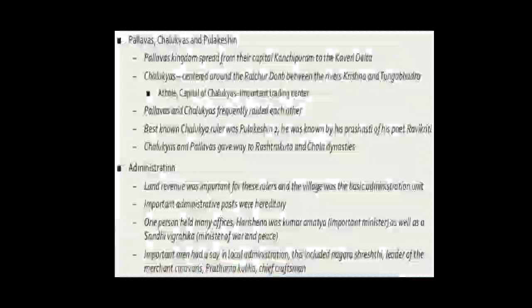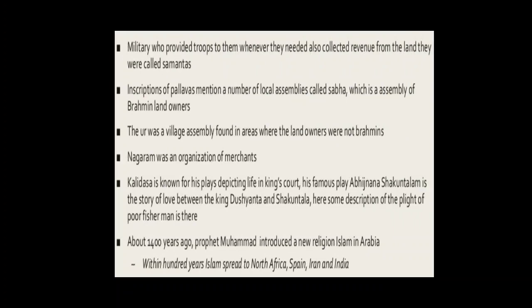These policies were reasonably effective, but sooner or later, some of these powerful men grew strong enough to set up an independent kingdom. A new kind of army: like early rulers, some of these kings maintained a well-organized army with elephant chariots, cavalry, and foot soldiers. Besides, there were military leaders who provided the king with troops whenever he needed them. They were not paid regular salaries; instead, some of them received grants of land. They collected revenue from the land and used this to maintain soldiers and horses, and provide equipment for warfare. These men were known as Samantas. Whenever the ruler was weak, Samantas tried to become independent.